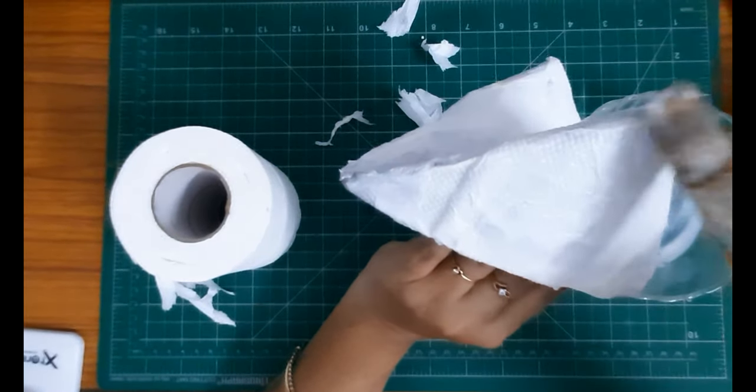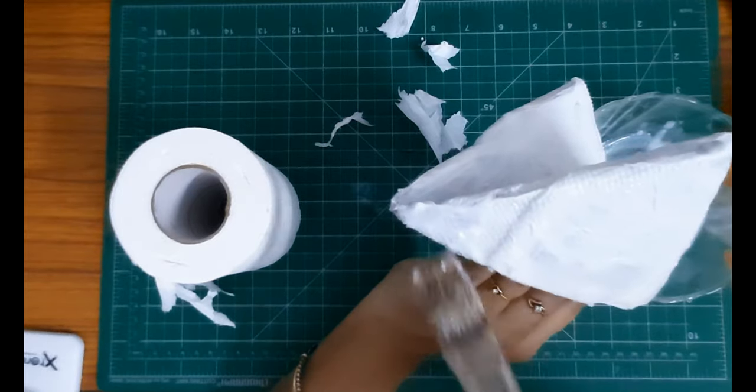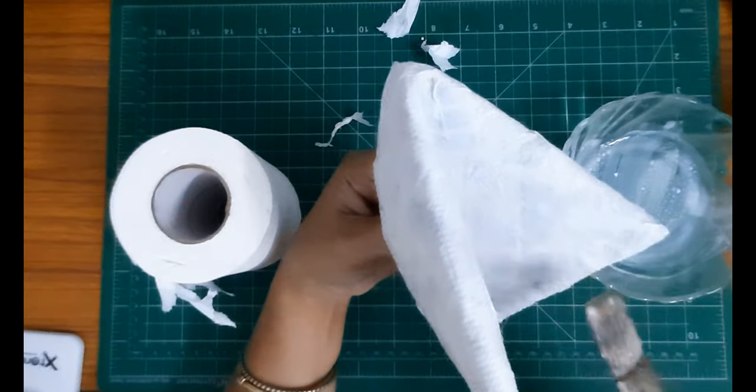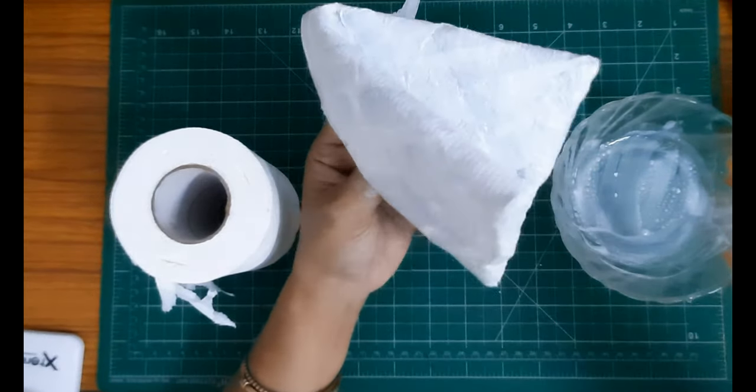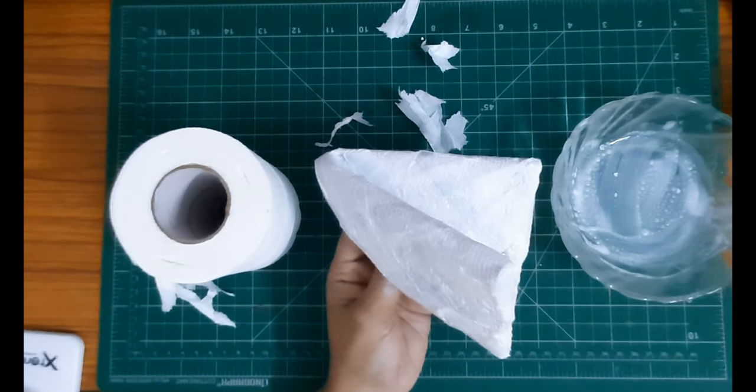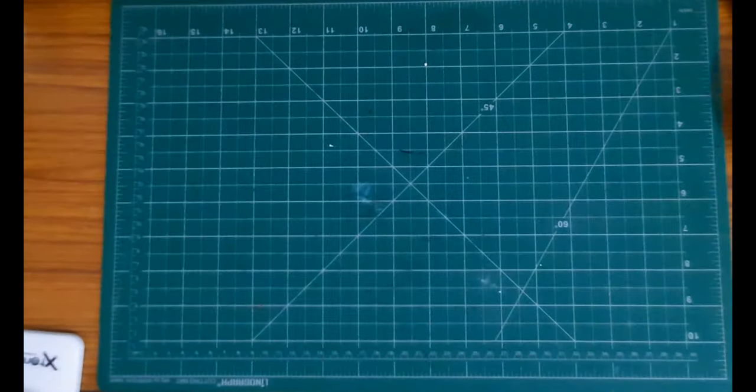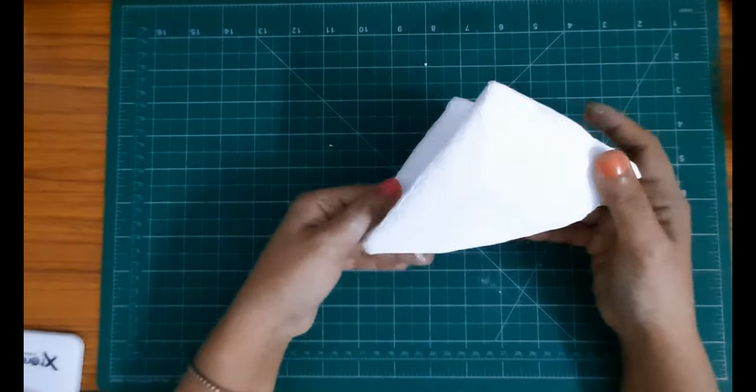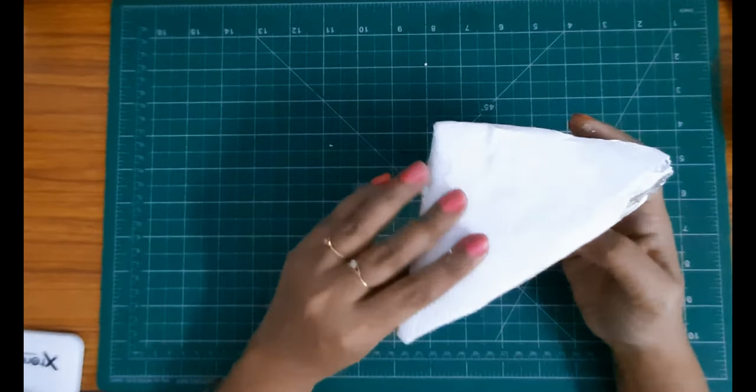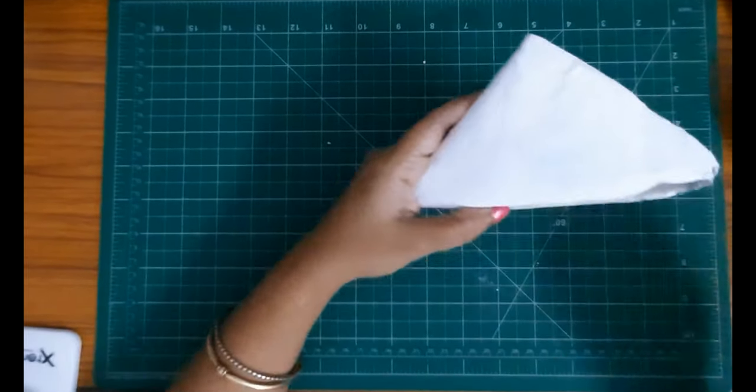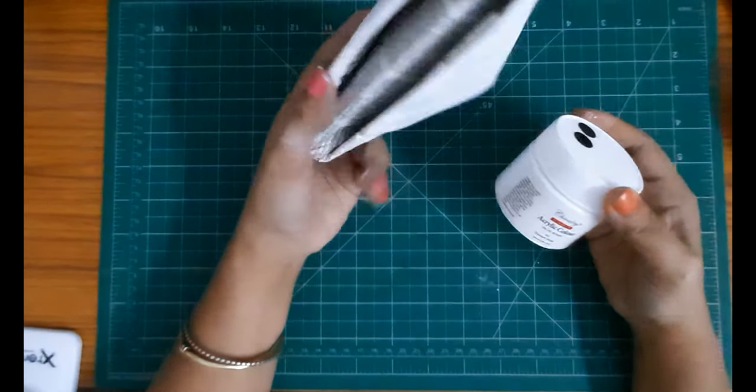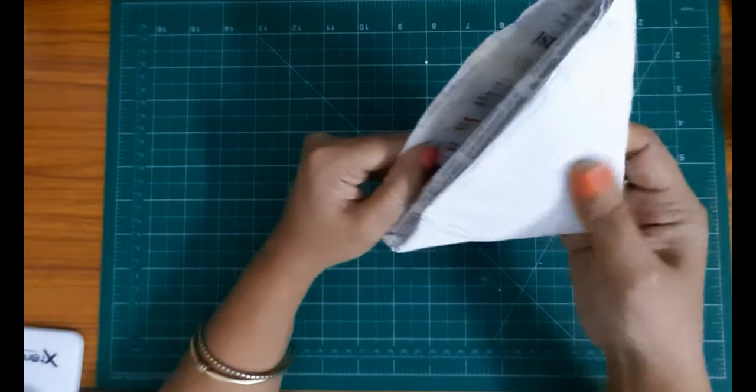So once I'm done with this paper mashing thing, I need to let it dry - it takes almost a day. Once it is nice and dry, then use acrylic colors of your choice to paint. Now I have already made one earlier. It's completely dry and then I applied one coat of white acrylic color which gives it a nice glossy and smooth look.